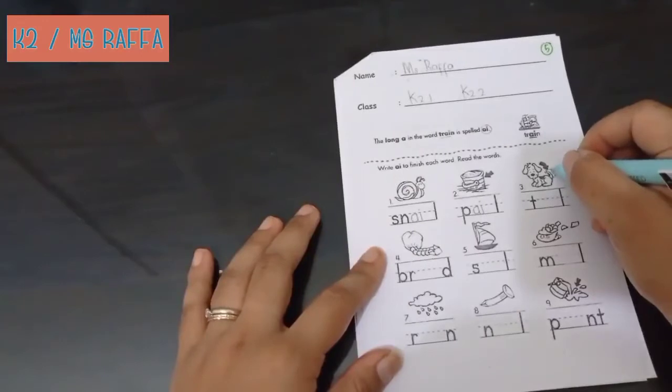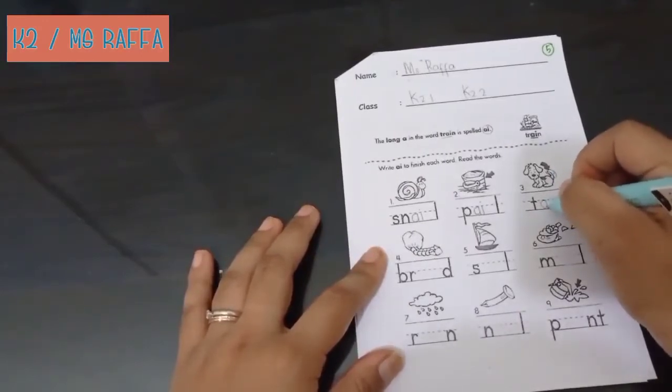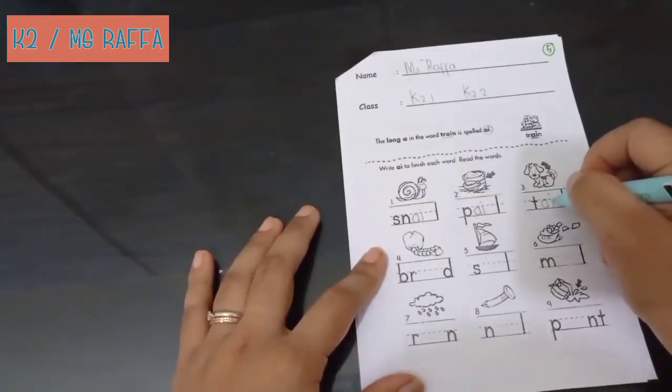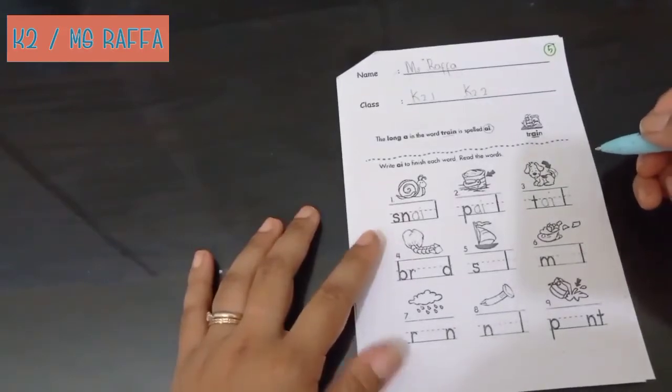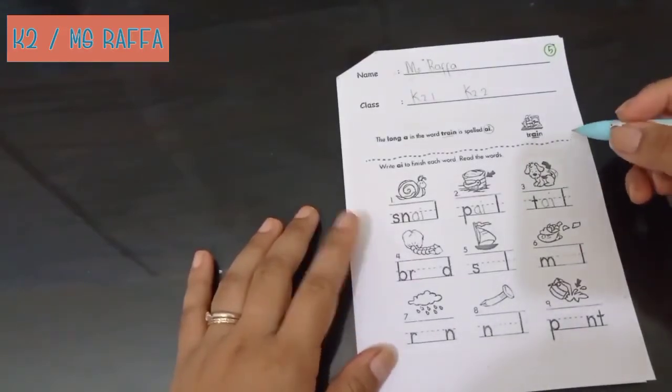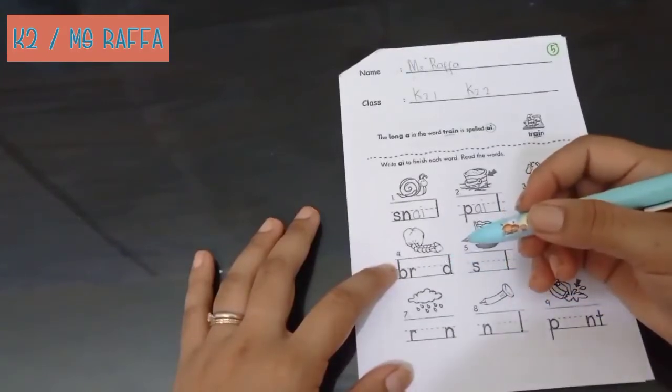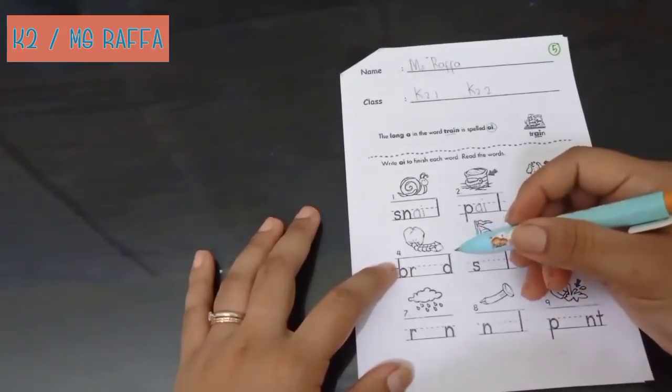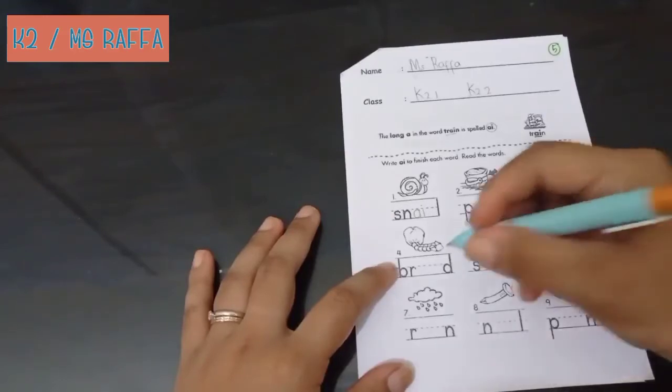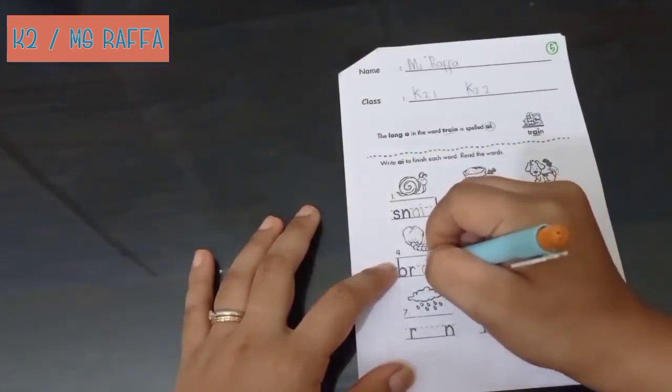And then we have in here, what is this? Tail. Tail, ekor. Tail. And then this one. It goes, yes, it goes have a long hair. It will braid. Braid. Braid means kepang. Braid.